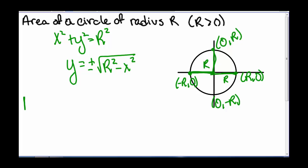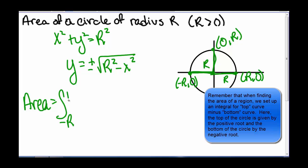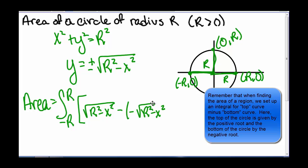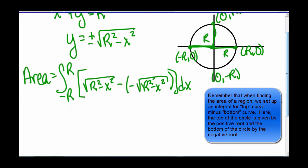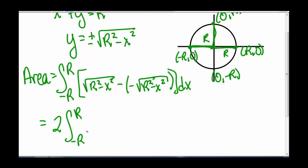So the area of our circle is going to be the integral from negative r to r of the square root of r squared minus x squared, minus negative square root of r squared minus x squared, with respect to x. When we simplify the negative signs, we get that this is equal to 2 times the integral from negative r to r of the square root of r squared minus x squared.